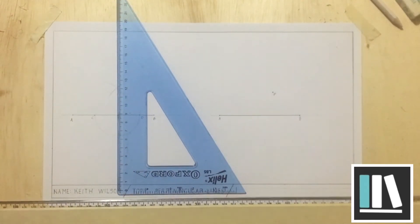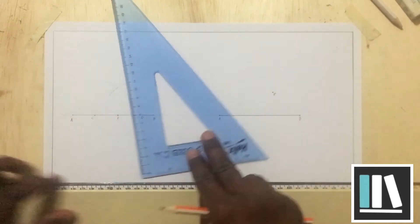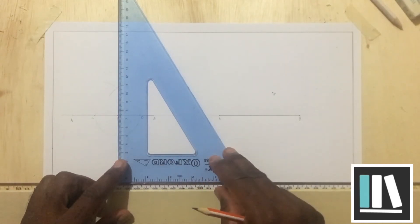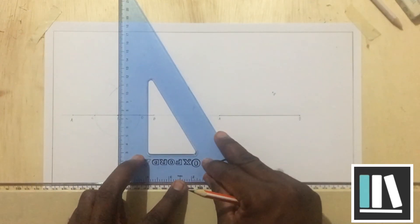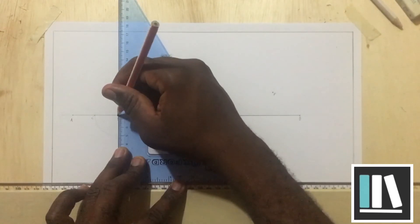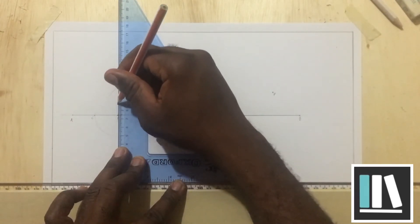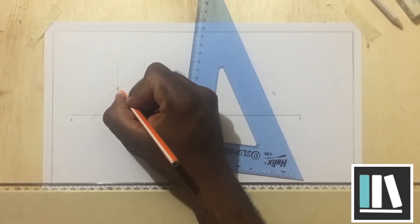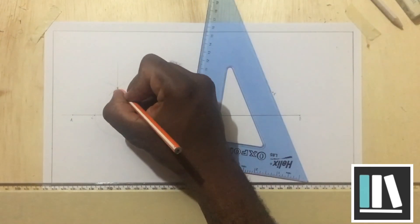I am going to take my set square and my T square to draw a line that is passing through point P and this line should also pass through point, I will call this point E.